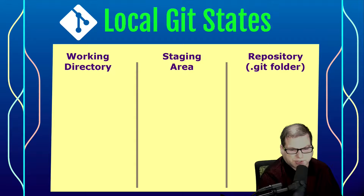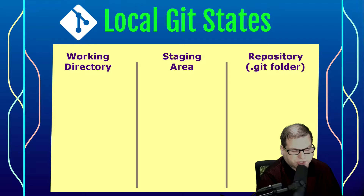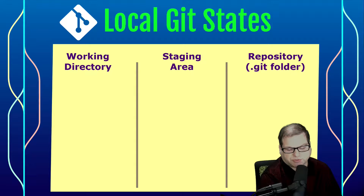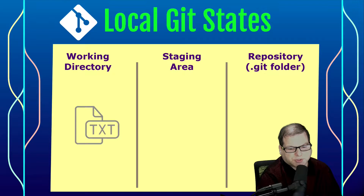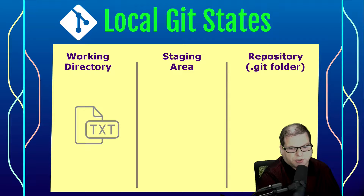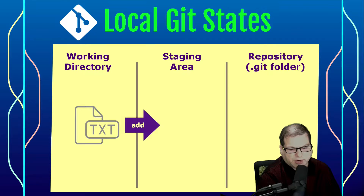Let's look at the local states in Git. That includes the working directory, the staging area, and the Git repository itself. This is part of the two-stage commit process, in which we start out with files on our working directory — the files we can create or make modifications to that are within our project's folder. Then we're going to add those changes to our staging area.